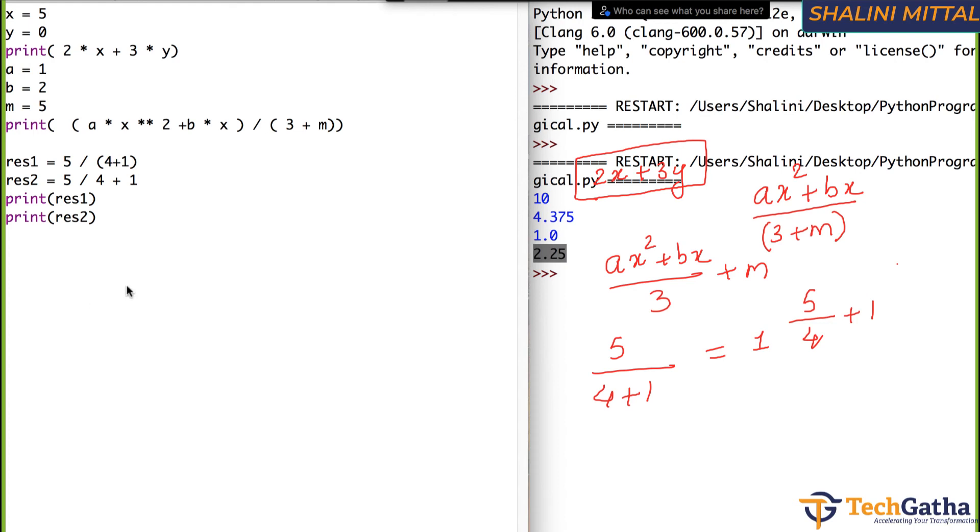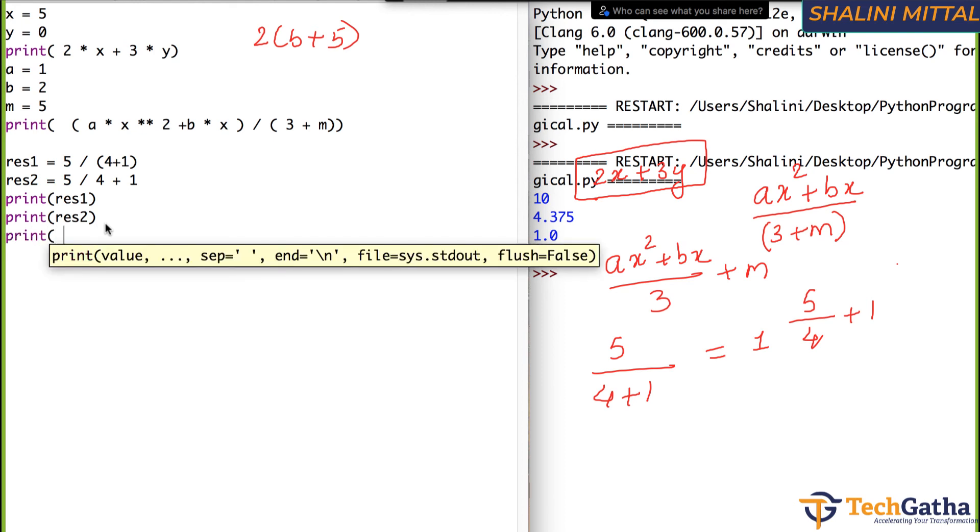Same way if I have an expression like this. So again, just 2 into Python doesn't understand. So if I go here and if I write print 2 in the bracket, I already have B plus 5. See,